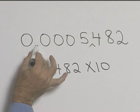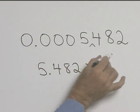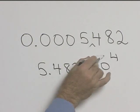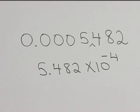Well we moved our decimal how many places, 1, 2, 3, 4, and since it's to the right it's negative. So in scientific notation we get 5.482 times 10 to the negative 4.